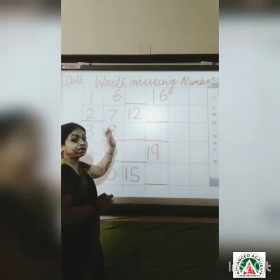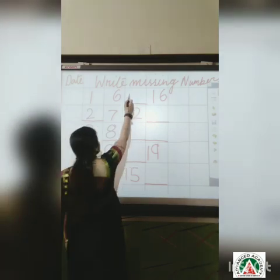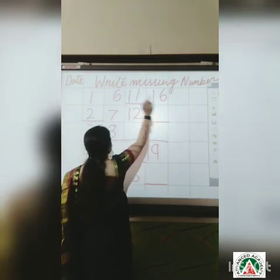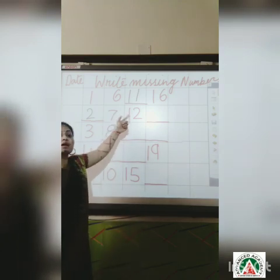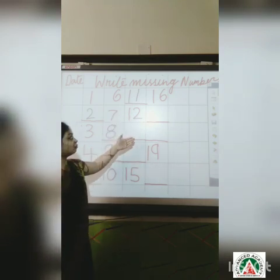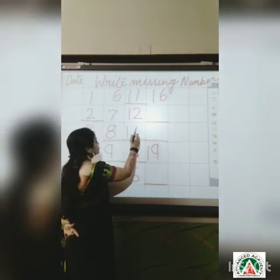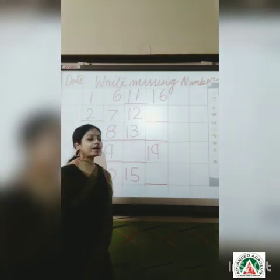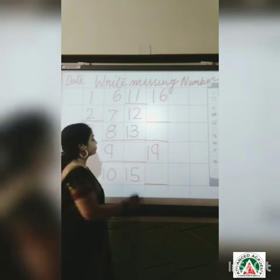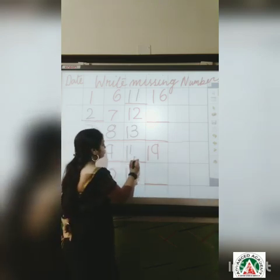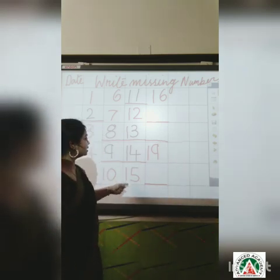What comes after 10? 10 ke baad one ki line start ho jaati hai. What comes after number 10? That is 11. And what comes after 11, children? 12. And what comes after 12? 13. And what comes after 13? 13 ke baad kya aata hai? 14. Correct. 13 ke baad aata hai 15.